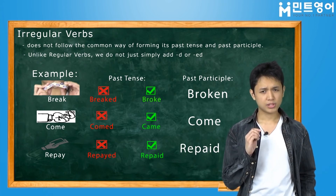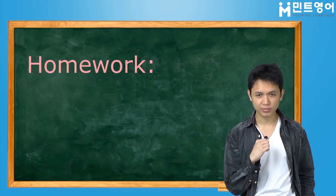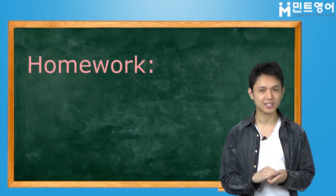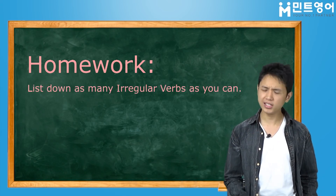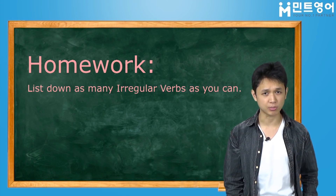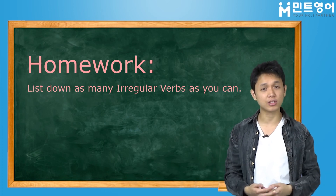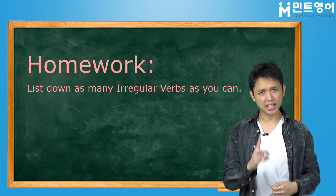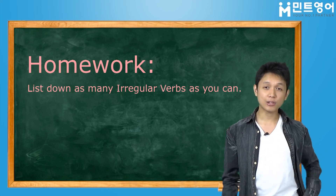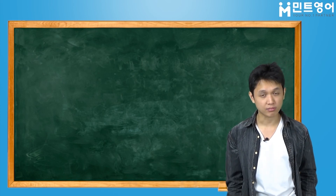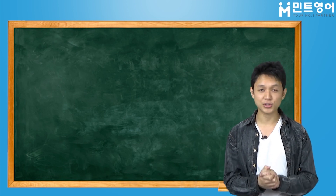Now that we've cleared that up, I want you to do something for me — more like a challenge. I want you to list down as many irregular verbs as possible. There are over 250 irregular verbs in English, and I bet you can't do them all, or at least half of it. Anyway, thank you for watching. Don't forget to watch our next video. Thank you so much, and bye!